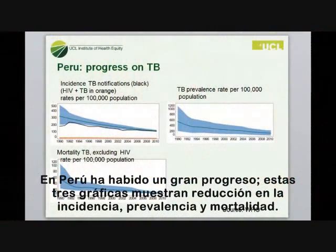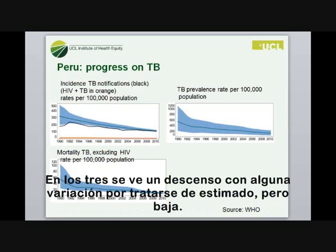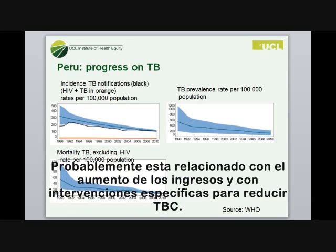In Peru, there's been good progress. These three graphs show incidence, prevalence, and mortality. In all three cases you can see a downward sloping graph — there's variation around the estimate, but it is downward sloping. That's probably related to improved income in Peru, and also to specific actions to reduce tuberculosis.